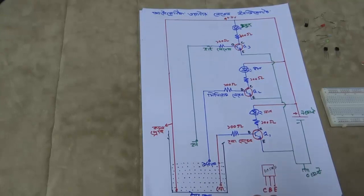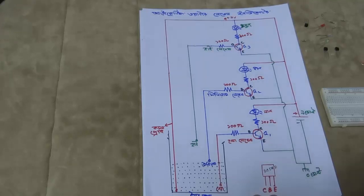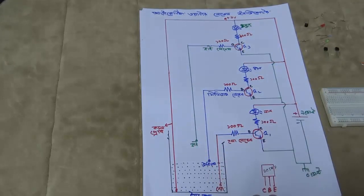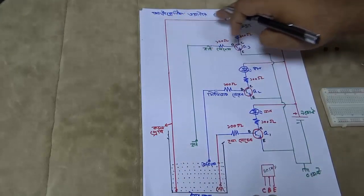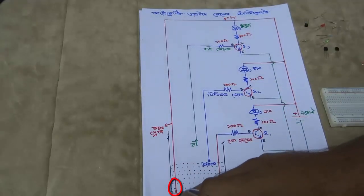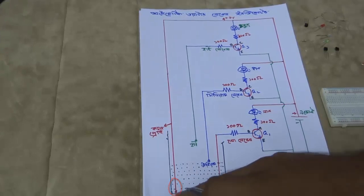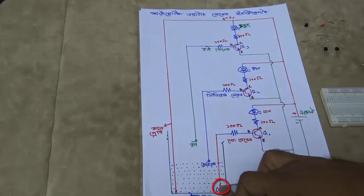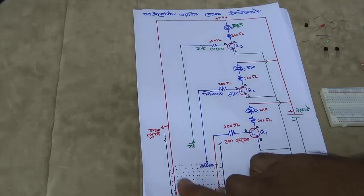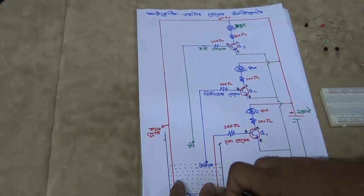This is the circuit and this is the tank. The water level can be high, medium, or low. This indicator shows the top of the tank. When the water is at low level, medium level, or high level, it is detected.